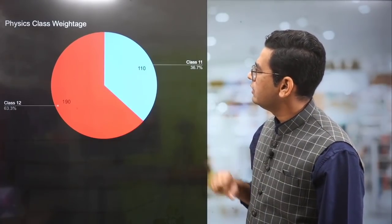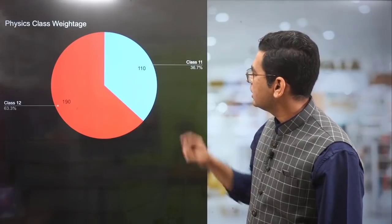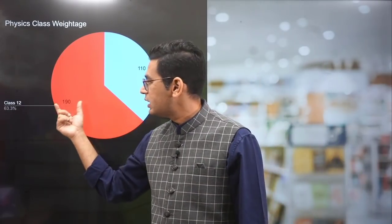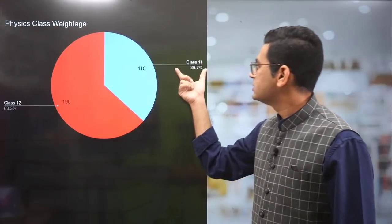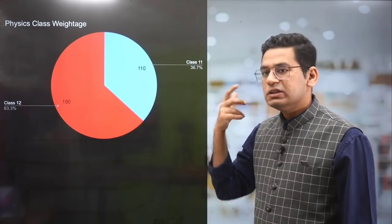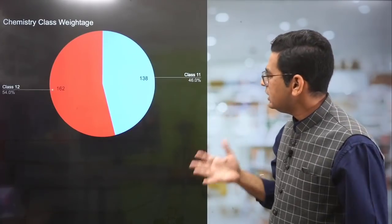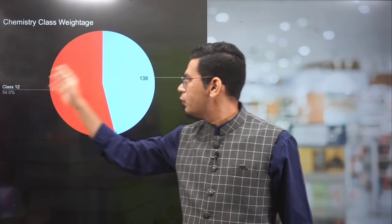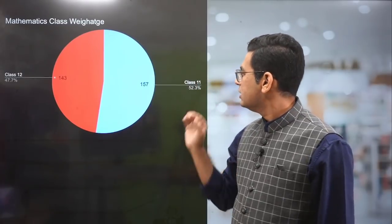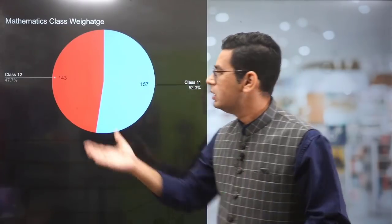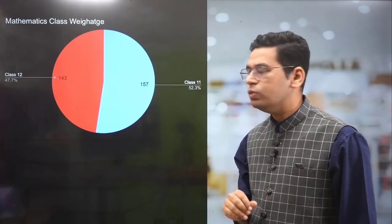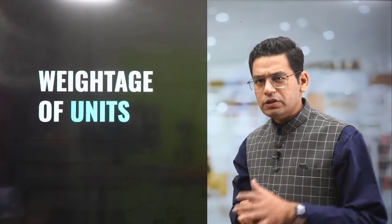In physics specifically, class 12th weightage is 63% as compared to class 11th which is about 37%. In chemistry it's balanced — class 12th is 54% and class 11th is 46%. In maths it's even more equal — class 12th is 48% and class 11th is 52.3%.